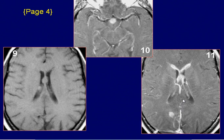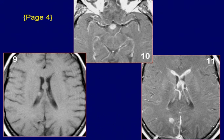A nodular enhancing lesion is also seen in the hypothalamic-chiasmatic region. This is a case of metastatic melanoma with drop metastases to the spinal cord.